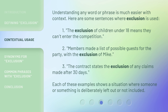Understanding any word or phrase is much easier with context. Here are some sentences where exclusion is used. One: the exclusion of children under 18 means they can't enter the competition. Two: members made a list of possible guests for the party, with the exclusion of Mike. Three: the contract states the exclusion of any claims made after 30 days. Each of these examples shows a situation where someone or something is deliberately left out or not included.